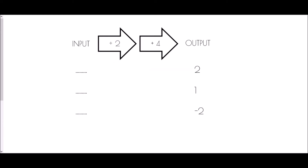Let's try another function machine: divide by two, then add four. Again we've been given the output so we work backwards. Instead of adding four I subtract four: two take away four is negative two. Then instead of dividing by two I multiply by two: negative two times two is negative four.